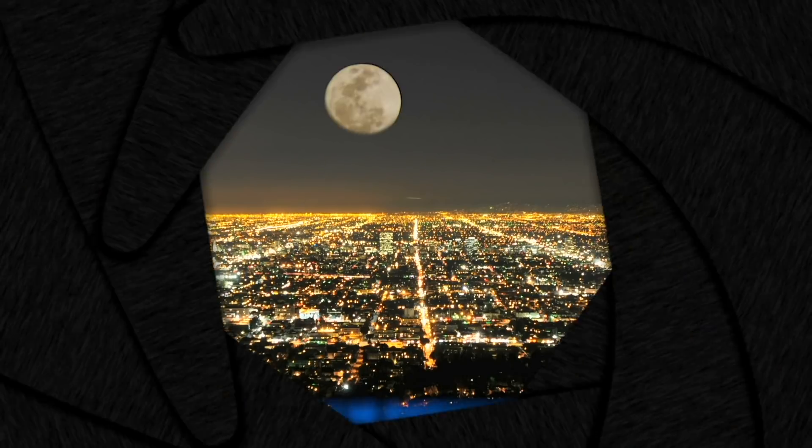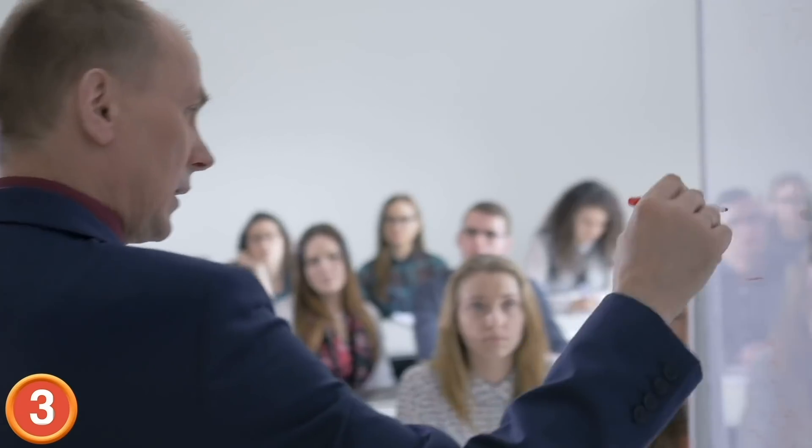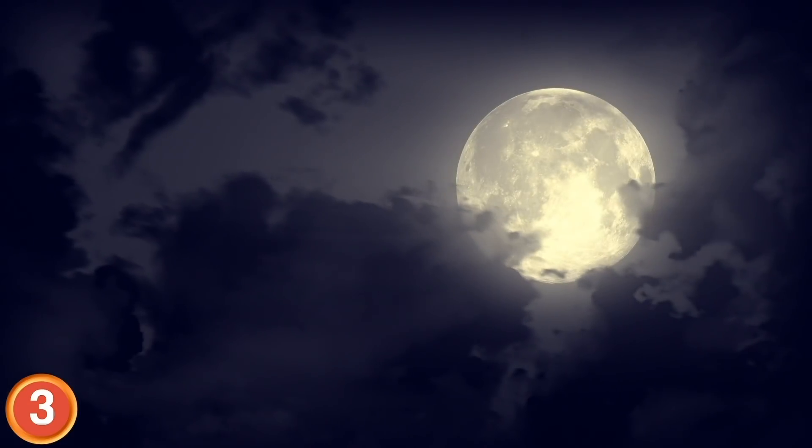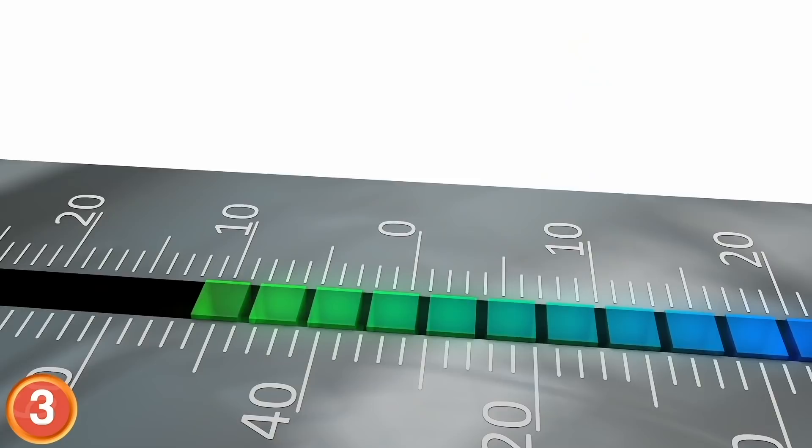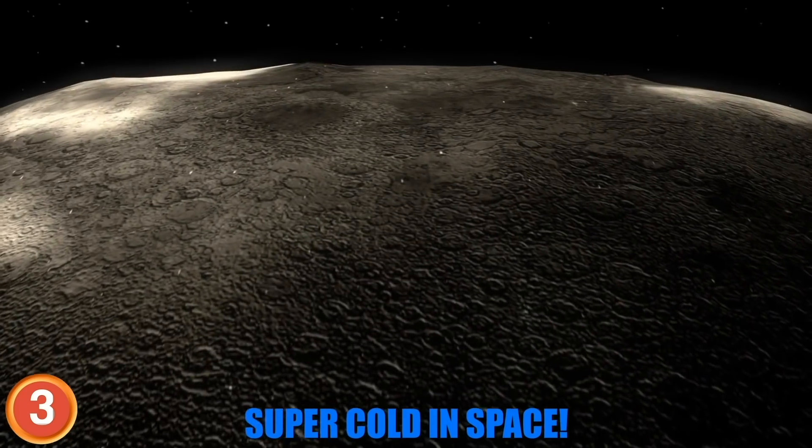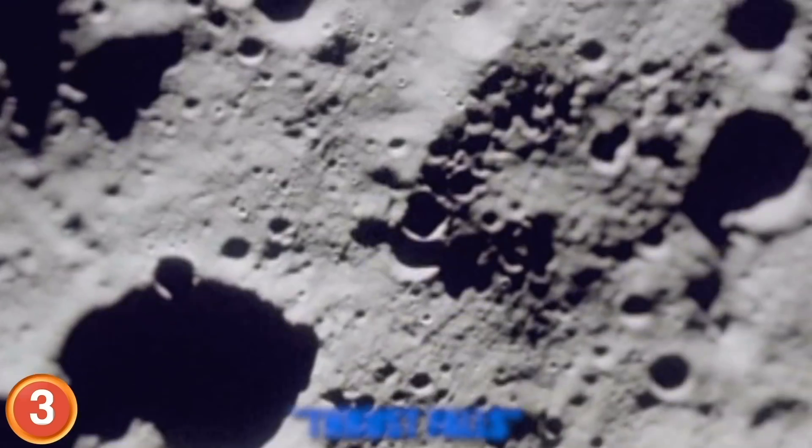Number 3. The Moon is Shrinking! According to a new study published by Nature Geoscience, the moon's core is cooling and that has resulted in its shrinkage of about 150 feet. An embarrassed moon has promised that it's usually much bigger. It's just that it's super cold in space. As it shrinks, the moon's brittle surface crust breaks and this creates thrust faults.